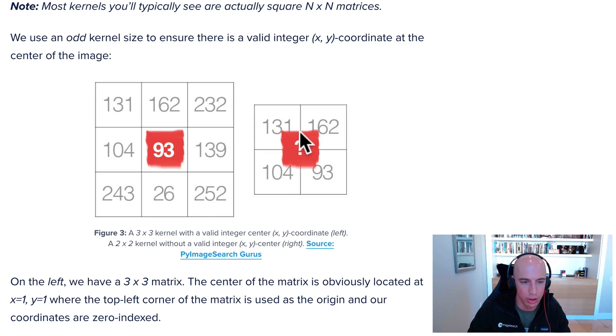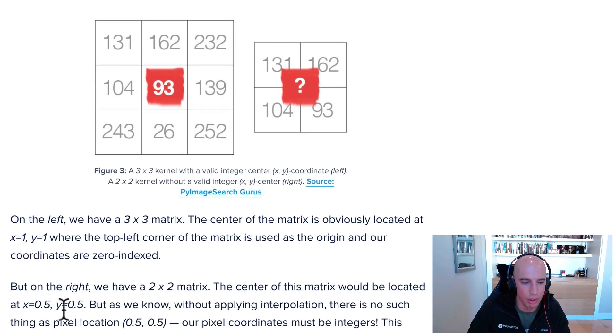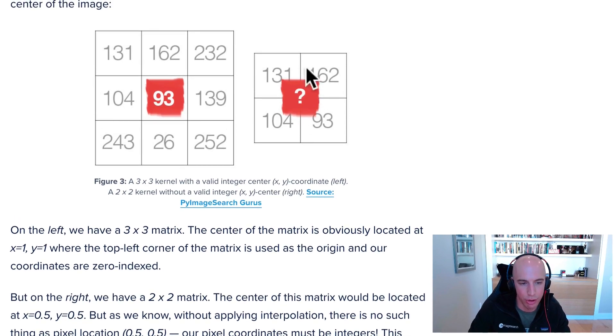But here there is no center kernel. I guess you could say it exists at x equals 0.5 and y equals 0.5, but since we're working with integer data, that doesn't make any sense. We can't interpolate what the center of that kernel is going to be. That's why you always see kernels with odd values.